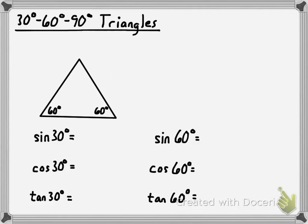Let's suppose we've got an equilateral triangle and all the sides of that triangle are two. What does an equilateral triangle have to do with 30-60-90 triangles? Well, you can always create a 30-60-90 triangle by drawing the altitude of an equilateral triangle. Because when you do that, you take this 60-degree angle up here and you split it into two 30-degree angles. So each half of that equilateral triangle is a 30-60-90 right triangle.